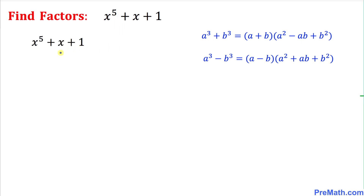Here is our polynomial. Let's manipulate it in such a way that we can apply one of these formulas. I am going to add x² and then subtract x² at the same time — they won't have any effect on this polynomial because they add up to 0.